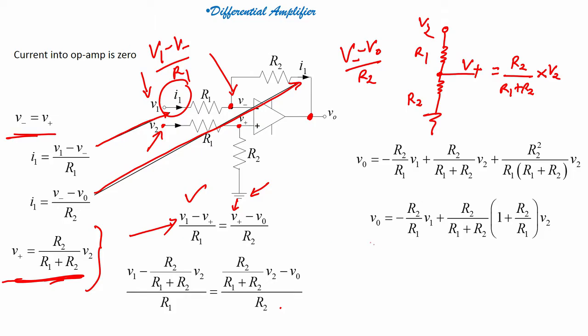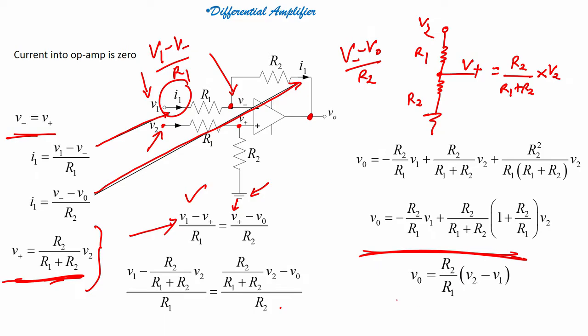If I solve further, I will find that Vo equals minus R2/R1 × V1 plus [R2/(R1+R2)] × (1 + R2/R1) × V2. Solving this further, the output voltage is nothing but R2/R1 into (V2 minus V1).